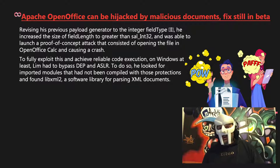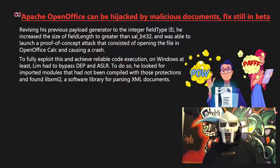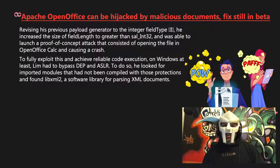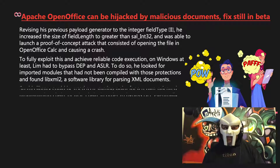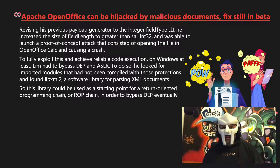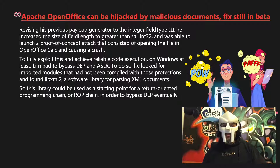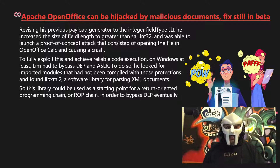To fully exploit this and achieve reliable code execution on Windows at least, Lim had to bypass DEP and ASLR. To do so, he looked for imported modules that had not been compiled with these protections and found libxml2, a software library for parsing XML documents. So this library could be used as a starting point for a return-oriented programming chain, or ROP chain, in order to bypass DEP eventually.